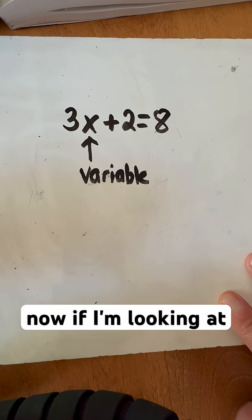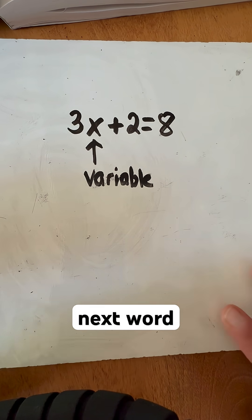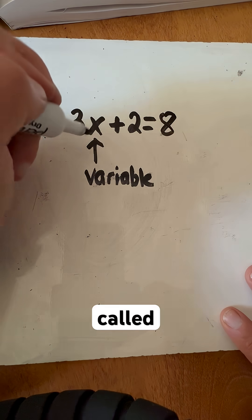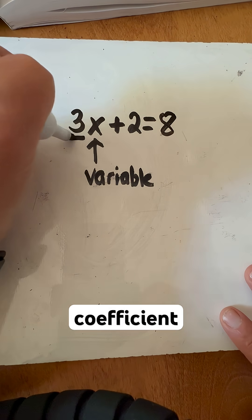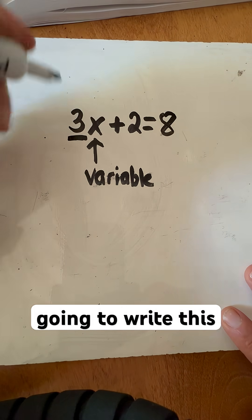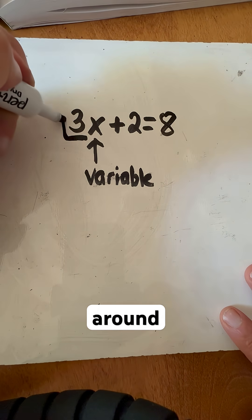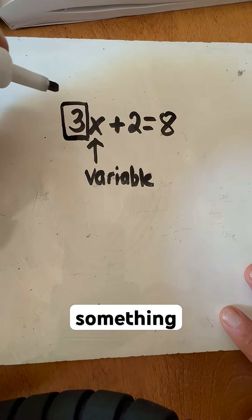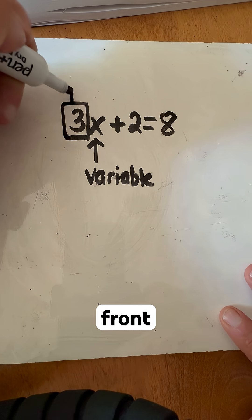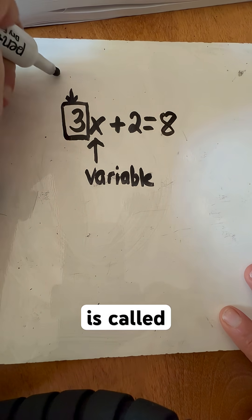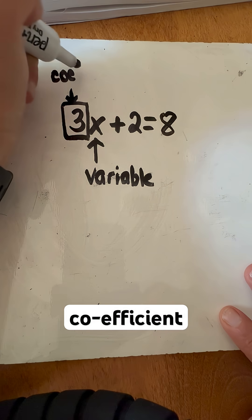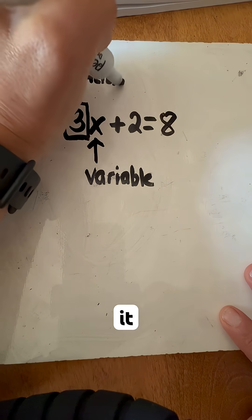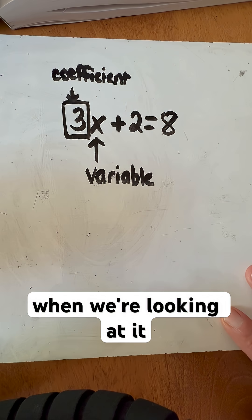Now if I'm looking at what the next word is, the next word is that number that's in front of it, the three. That is what's called a coefficient. I'm going to write this around here, so I'm going to put a box around this so you can see. So anytime we have something that is a number in front of a variable, it is called a coefficient. And so that is how we spell it, and that's what it is when we're looking at it.